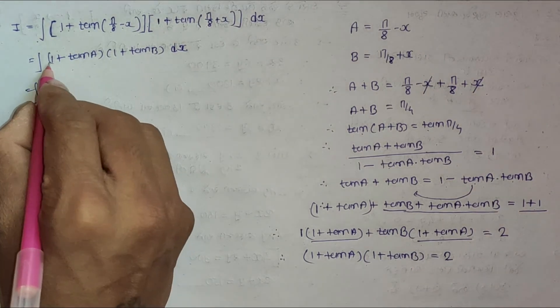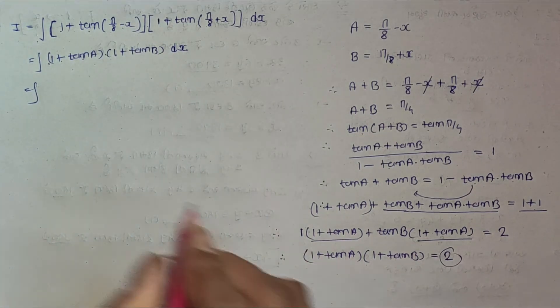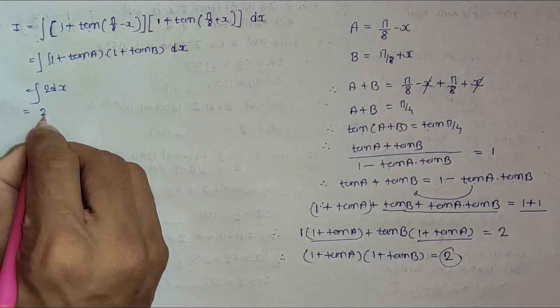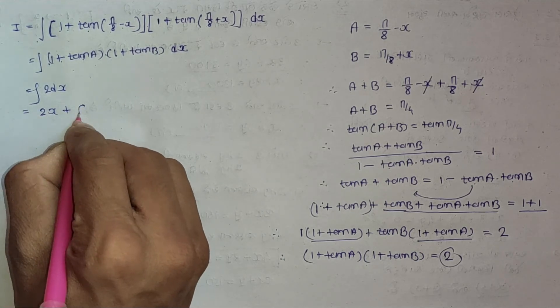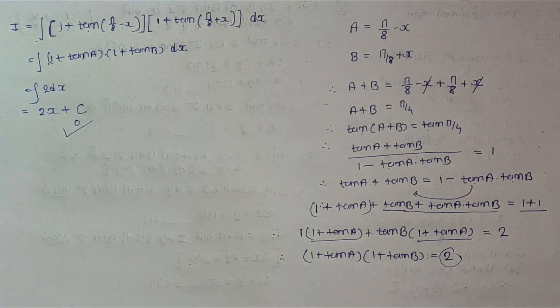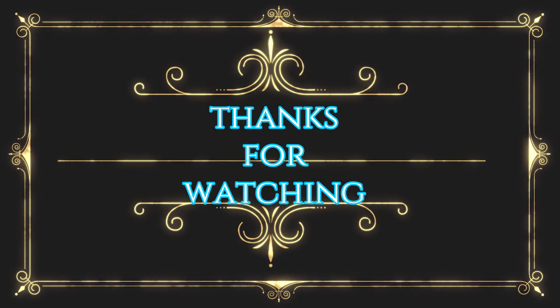So integration of (1 + tan A)(1 + tan B) dx equals 2 dx. The integral is 2x + C, and that is the answer. Easy. I'll see you next time.